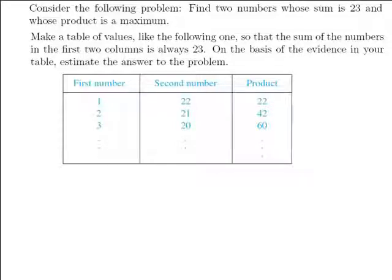Consider the following problem. Find two numbers whose sum is 23 and whose product is a maximum. Make a table of values like the following one so that the sum of the numbers in the first two columns is always 23. On the basis of the evidence in your table, estimate the answer to the problem.